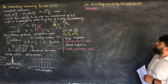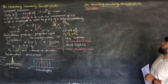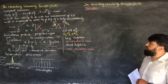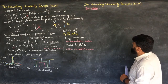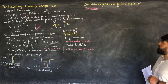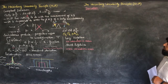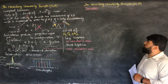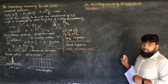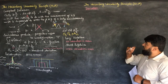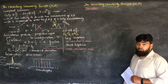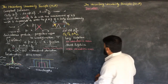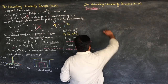We will now derive the Heisenberg Uncertainty Principle. The derivation follows some portion from D.J. Griffiths where the Cauchy-Schwarz inequality is used. We will deviate a little bit from that and start from scratch, using the orthonormality condition in Hermitian operators to prove this in a very simple way.